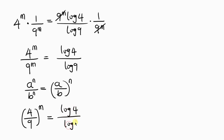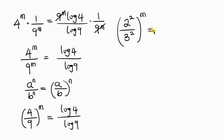Simplifying further: 4 is a perfect square expressed as 2 squared, and 9 is also a perfect square expressed as 3 squared. So we have 2 squared over 3 squared, all raised to m. On the right hand side, log 4 becomes log 2 squared over log 9, which is log 3 squared.